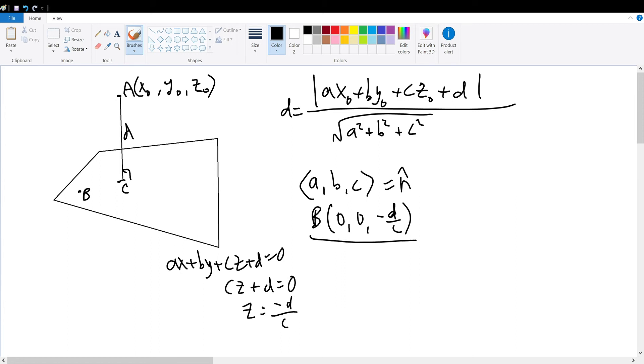And then, we can connect point B to point A to form BA vector. Now, BA vector will be equal to the components of B subtracted from the components of A, which will be x0, y0, and z0 plus d over c. Hence, the vector BA is x0, y0, z0 plus d over c.